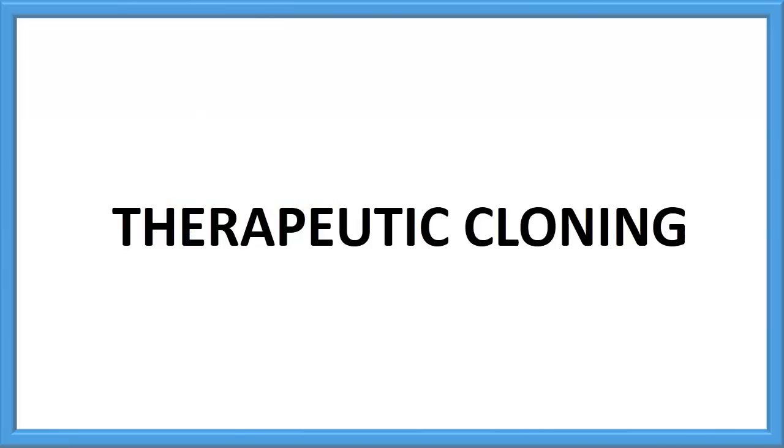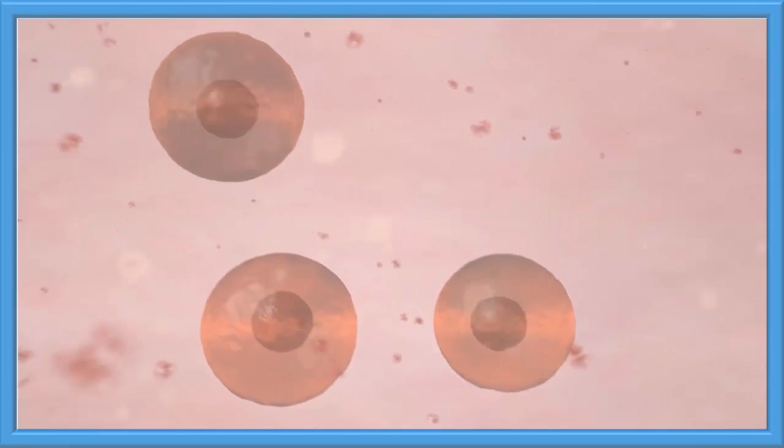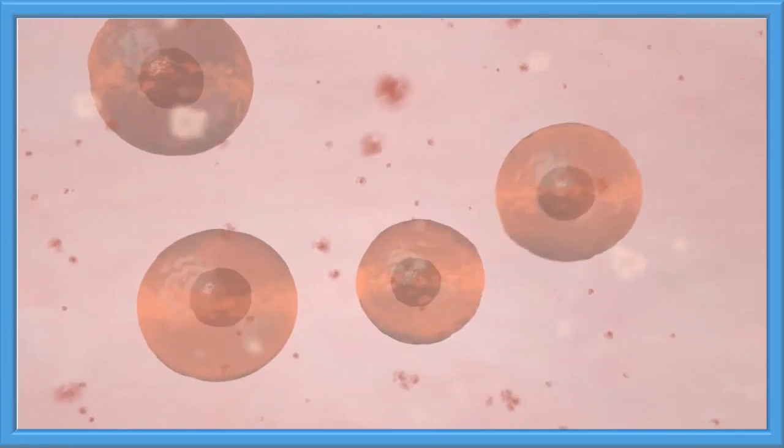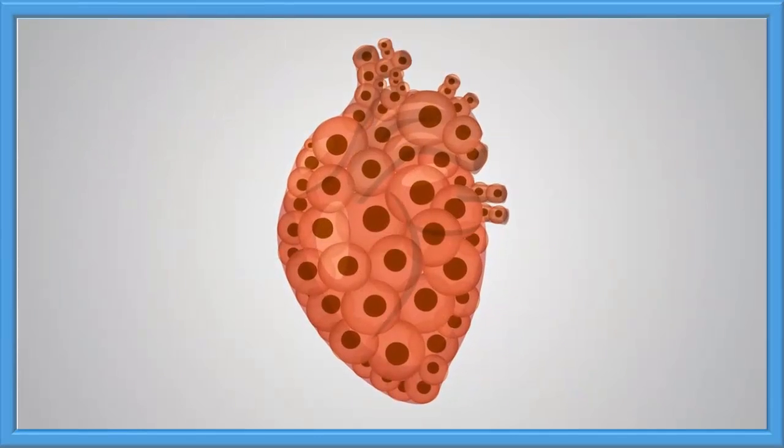Therapeutic cloning is used in curing disease. Stem cells can grow into any type of cells. Insert the stem cells into the area with damaged tissues. Stem cells differentiate to form new healthy tissues.